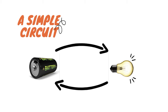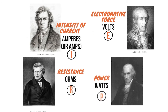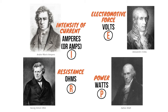If something breaks the path, like a switch, then the electrons are stuck until the path is completed again. A switch breaks and completes a circuit between the power source and the device. In order to go any deeper with electricity, we have to learn some terms and meet some famous international scientists. The first is how we refer to electromotive force — the pushing force that moves the electrons. This force is measured in volts, named after the Italian scientist Alessandro Volta.